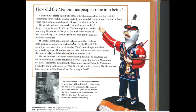The First Menominee continued walking along the riverbank until he spied a golden eagle circling high in the sky. He called the eagle down and asked it to be his brother. The Creator also permitted the eagle to change form. Now there were two Menominee brothers. Each became the head of a clan — a group of native people with the same ancestor — and their descendants became the clan. The two brothers came upon other animal spirits, and one by one these also became brothers. Each clan has its own story of joining the first two Menominee brothers. Together, the clans formed the Menominee people.